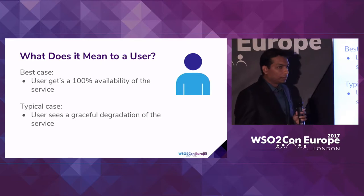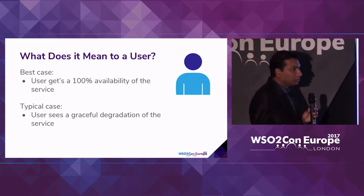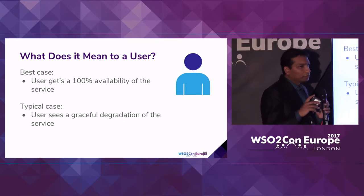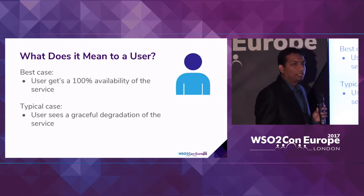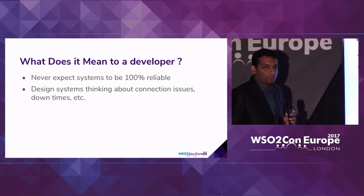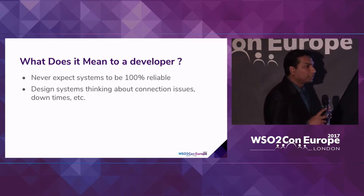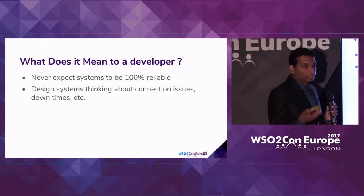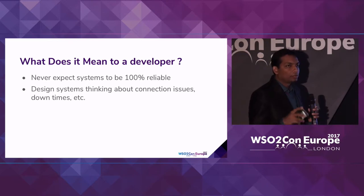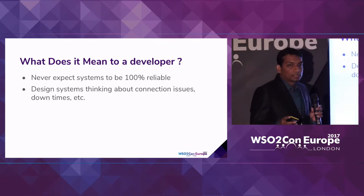For a user, in the ideal case they will experience 100% availability — a smooth interface without any failures. But this ideal case is hard to achieve. In typical cases, users will experience some degradation of service, maybe slowness or intermittent failures. For a developer, when building software we need to think about these failures. We can't just rely on networks being 100% available and reliable. When designing software we need to consider connection issues, network slowness, and congested networks.